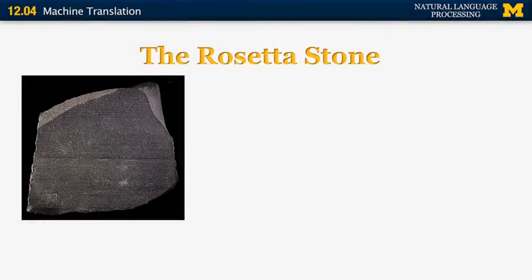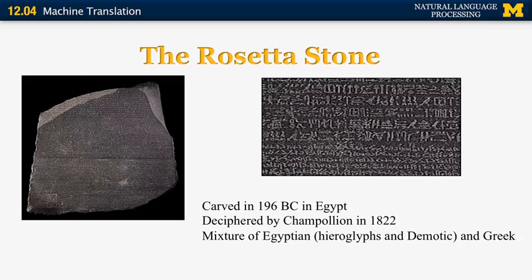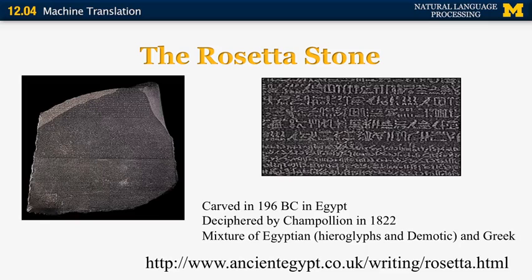Most modern translation software is based on statistics. As an example, I'm going to show you the so-called Rosetta Stone, which illustrates how statistics can be used to translate languages. The Rosetta Stone has inscriptions in three languages — Egyptian at the top and Greek in the middle. This stone was carved in Egypt in 196 BC and was only deciphered by Champollion in 1822. He figured out that those texts, even though in different languages, were translations of one another, and used pattern recognition to match symbols across languages. If you're interested, you can go to a website to look at the entire text and the alignments.